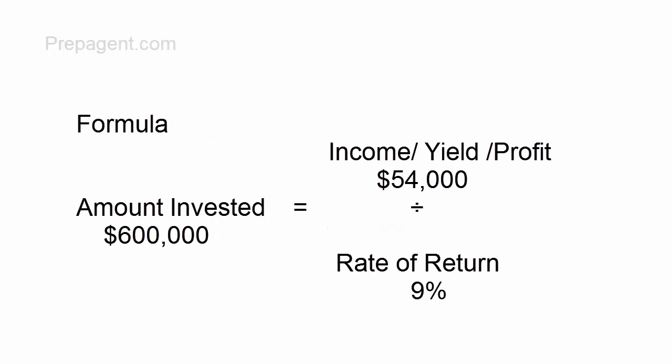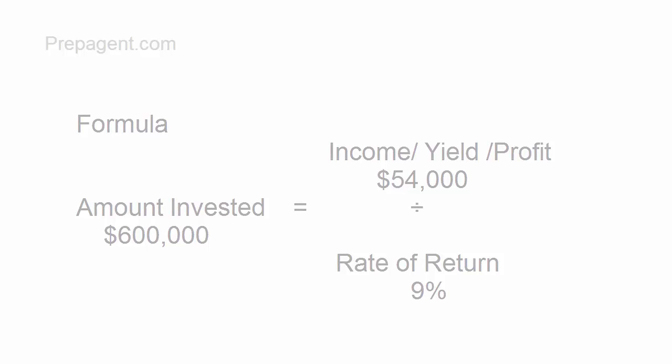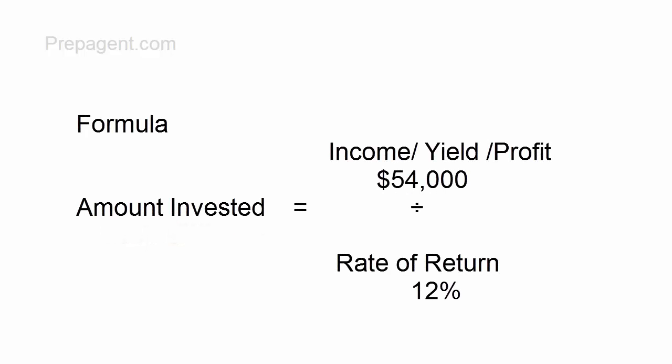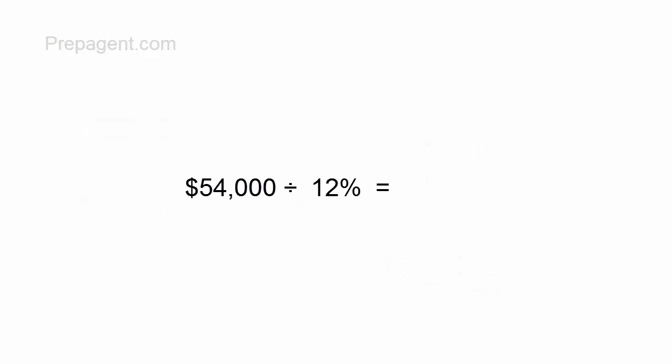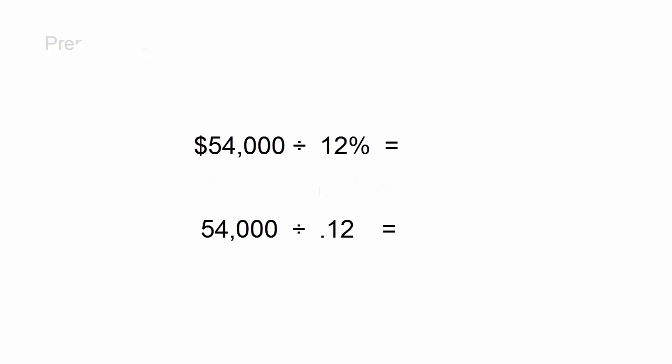Again, you get that by dividing $54,000 by the rate of return of 9%. Now we're going to substitute the percentage rate of 12%. So $54,000 divided by the rate of return of 12%, on your calculator it's 0.12. $54,000 divided by 0.12 will give you $450,000.